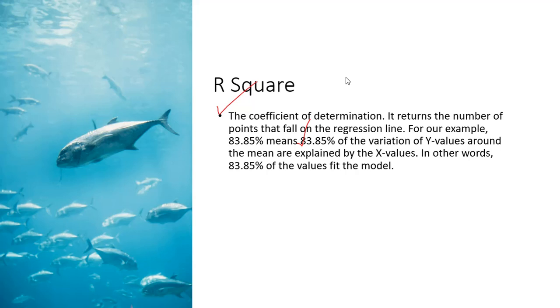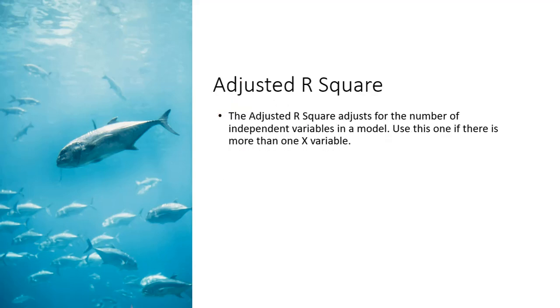The adjusted R square variation is really important if you have more than one independent variable. Our independent variable was length of the fish and our dependent variable was weight. So we have a single independent variable. So we would really only want to use this variation if we have more than one X or independent variable.